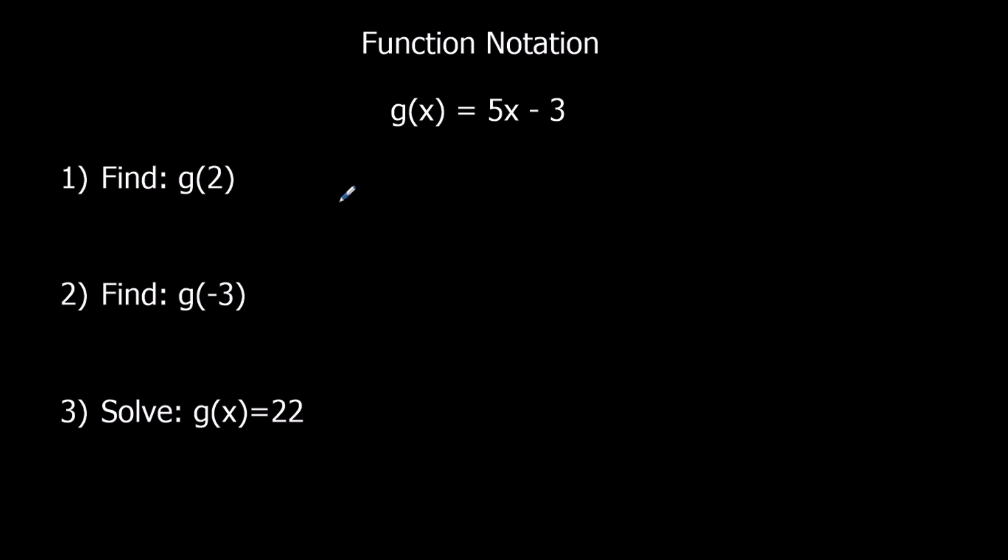So g of 2. The input's 2. We put 2 in. 5 times 2 minus 3. 5 times 2 is 10. Minus 3, that's 7.